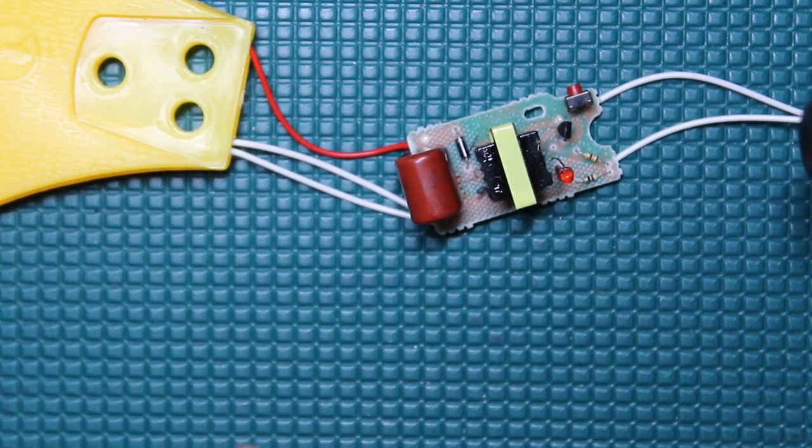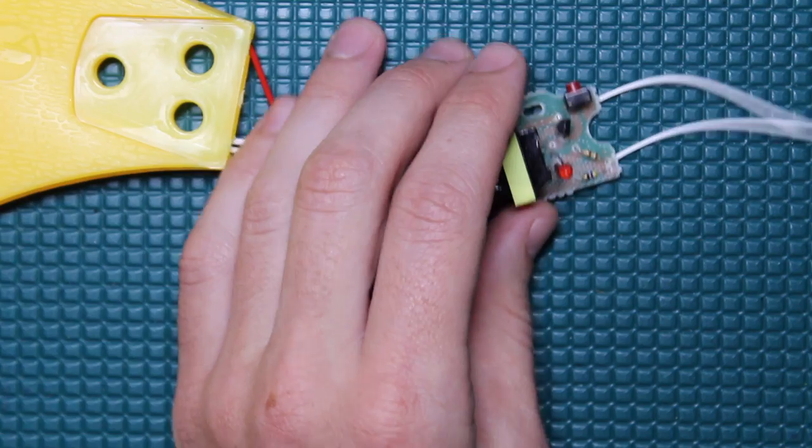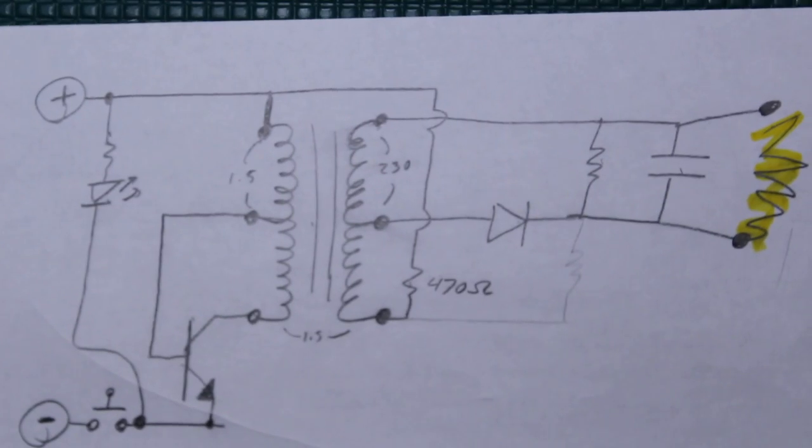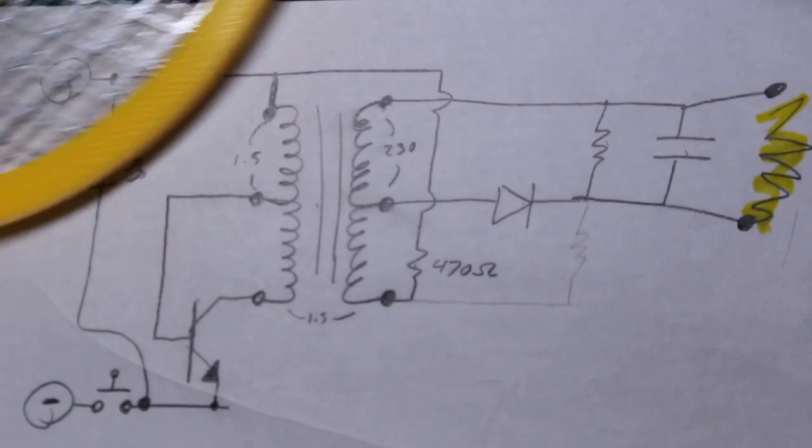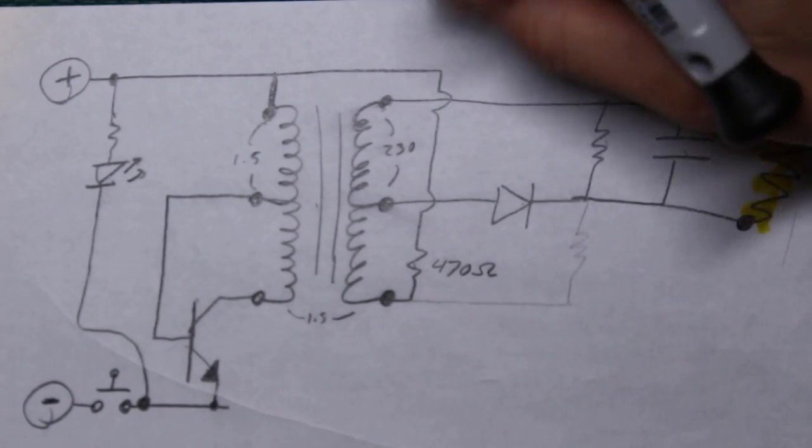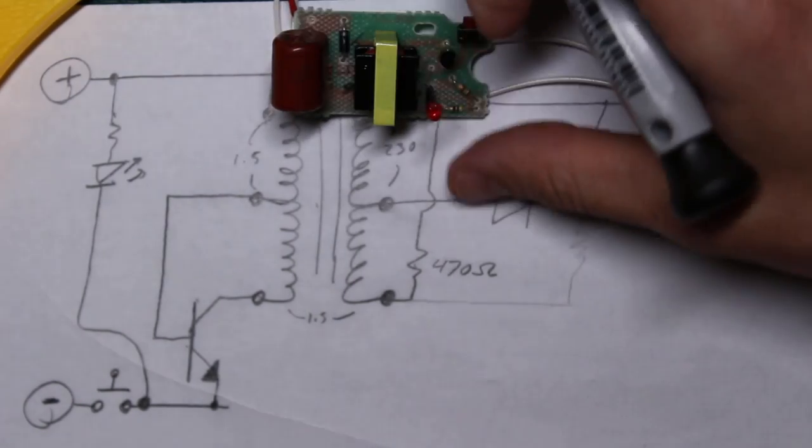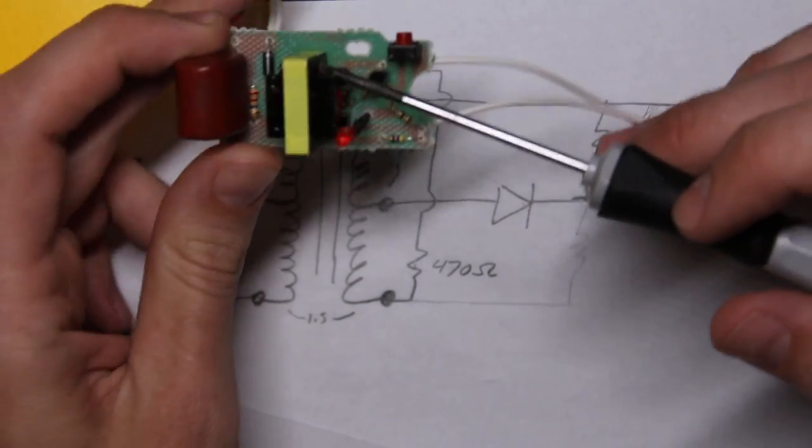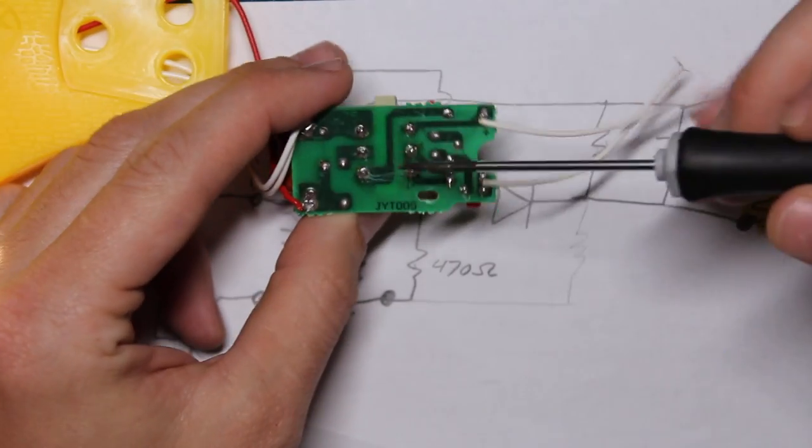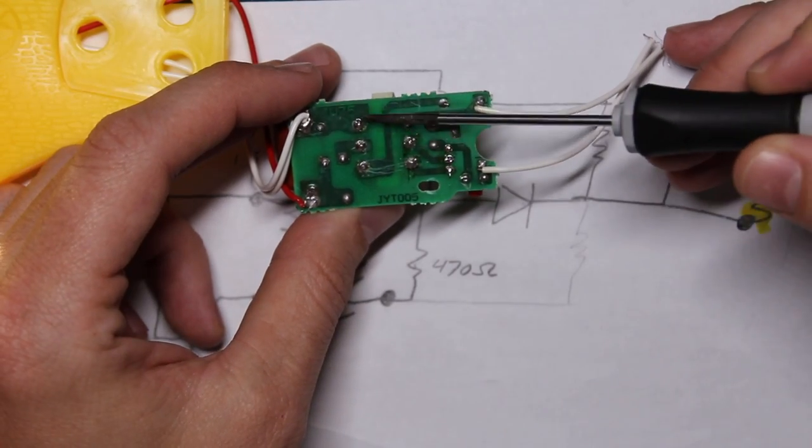So when I first traced this out, I came up with this. At first this was all making sense - I've seen this type of transformer before at other power supplies. It's a six pin transformer, you've got three pins on the low voltage side and three pins on the high voltage side.